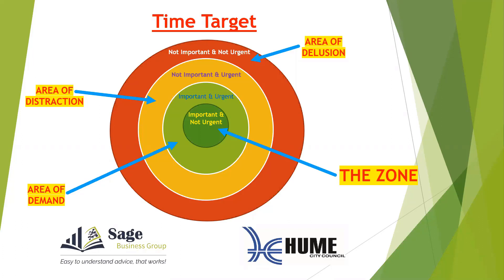The zone includes activities that are important but not urgent, and this is the area of quality. Here's where we do our planning, we anticipate and prevent problems, we empower others. Remember, we can't really grow our business — we can only grow our team — and this is where you do that. This is also where we develop our skills. Ignoring this area feeds and makes target area two, the important and urgent area, much larger, because it moves things from being important and not urgent into being important and urgent. The zone is commonly referred to as the area of leadership.